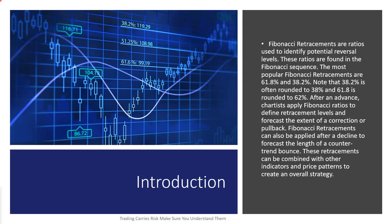Fibonacci retracements are ratios used to identify potential reversal levels. These ratios come from the Fibonacci sequence. The most popular Fibonacci retracement levels are 61.8 and 38.2. We can round them off to 38 and 62. Also we include the 50% retracement level, although 50% has nothing to do with Fibonacci — it comes from Dow theory — but in Forex trading everybody's looking at it. There's also the 23 level, the 78.6, and infinite numbers of levels.